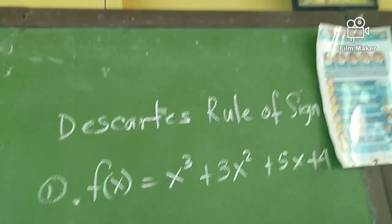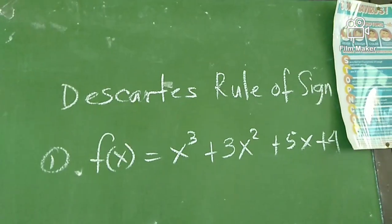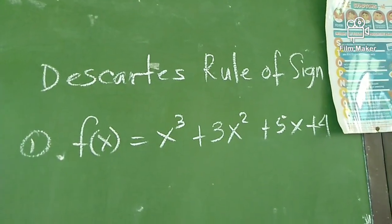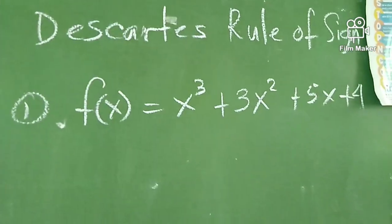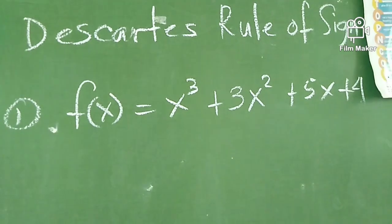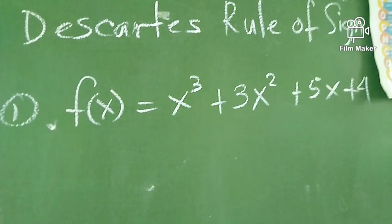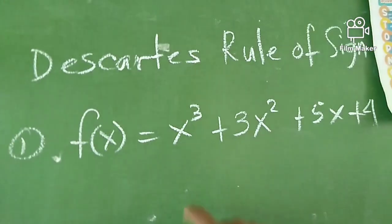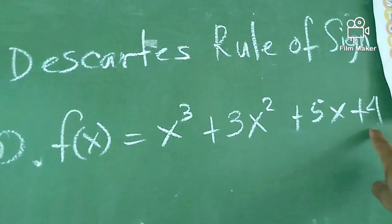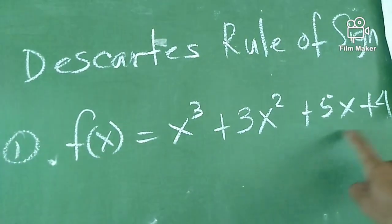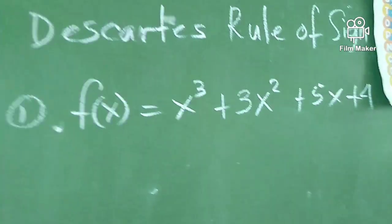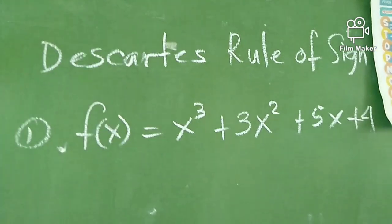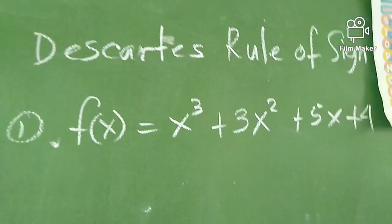And another thing he shared with us is the Descartes Rule of Signs. When we talk about the polynomial function f(x) = x³ + 3x² + 5x + 4, the Descartes Rule of Signs looks at adjacent terms. We observe when the sign changes between adjacent terms. When the sign of adjacent terms changes, it means we have one zero there — possible zeros.